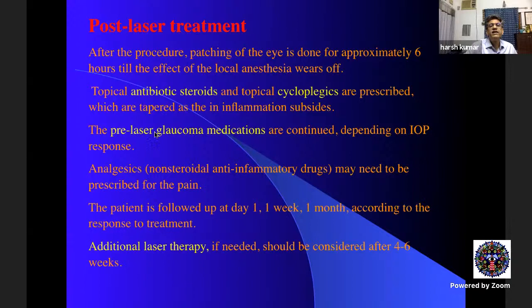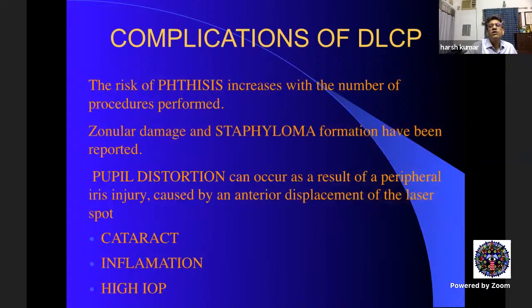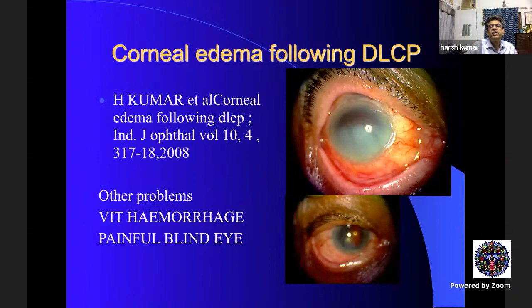Post-laser, continue all glaucoma medications until pressure is controlled. Give topical antibiotic steroids for a week and strong analgesics for pain. For seeing eyes, treat one or two quadrants and review — do not repeat earlier than four to six weeks. Complications: phthisis, complete vision loss, staphyloma, pupillary distortion, vitreous hemorrhage, cataract, hypotony, elevated pressure, corneal edema — obtain clear written consent for all these risks.